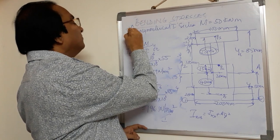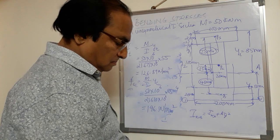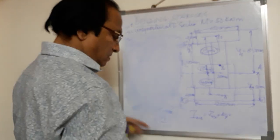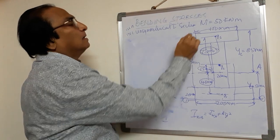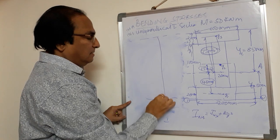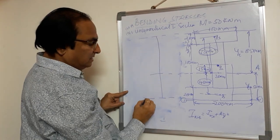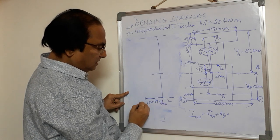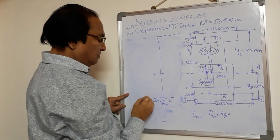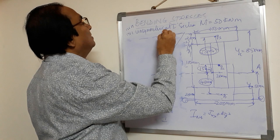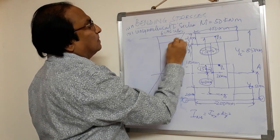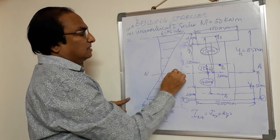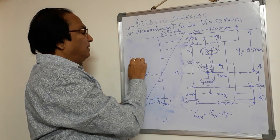If you draw the bending stress diagram for these values: at the bottom, the tensile bending stress F_T = 126.89 N/mm². At the top, the compressive bending stress F_C = 196.1 N/mm². At the neutral axis, the bending stress is zero. This is the bending stress diagram. For any figure given to you, you can follow this method.